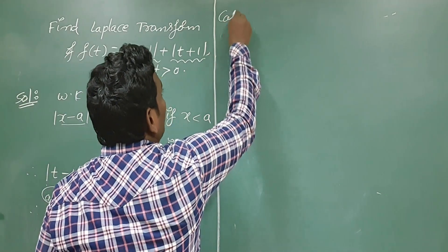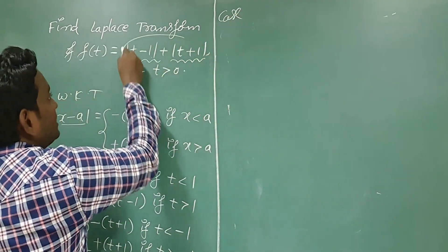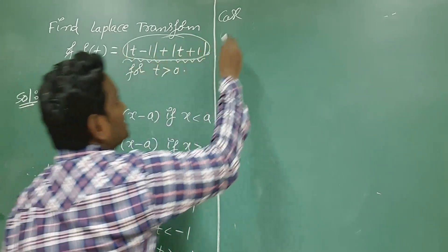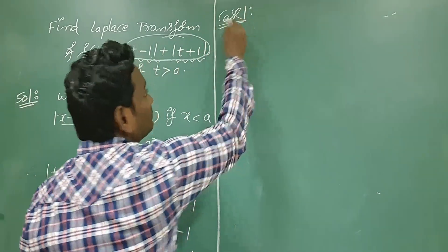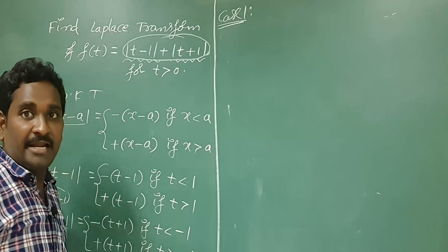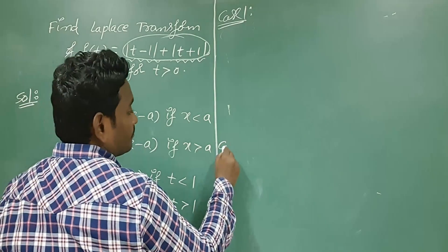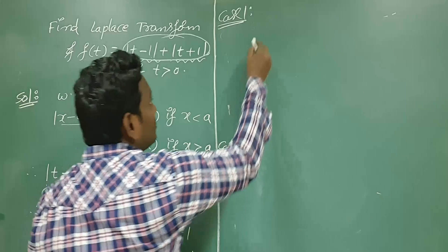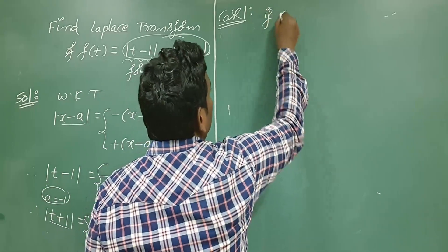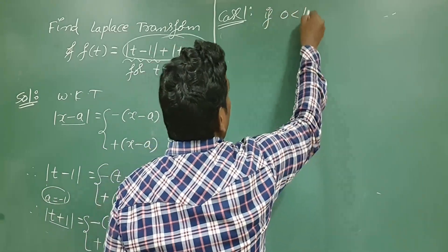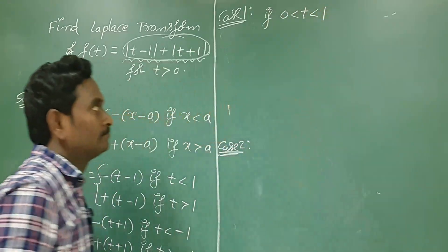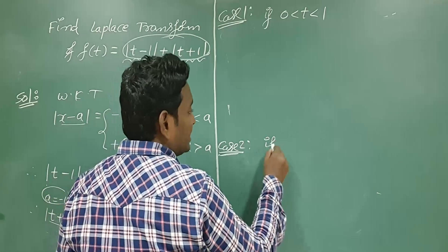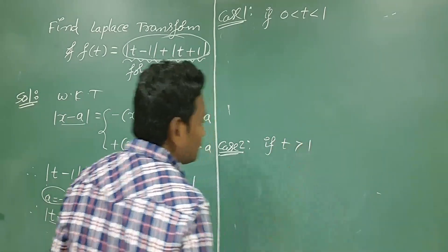Now we have to find the entire summation of both parts in two cases. Case 1: 0 less than t less than 1. Case 2: t greater than 1.